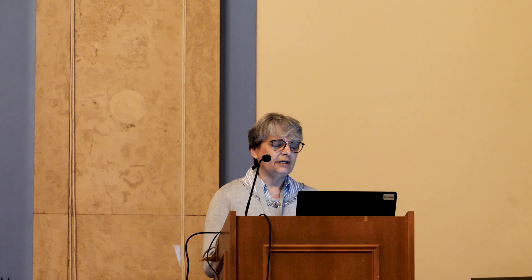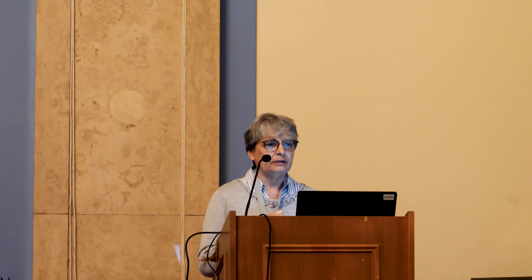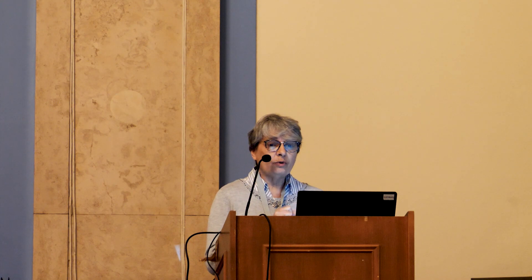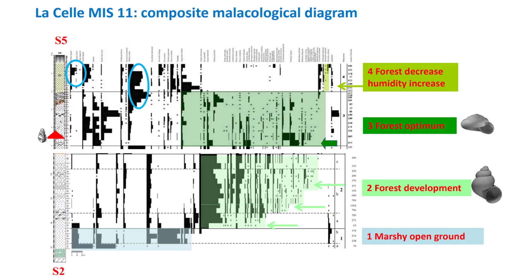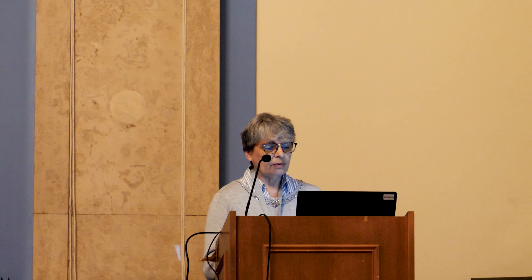I go back to La Sède, which is now very familiar to you — and you understand it is my favourite site. Just a quick slide to remind you of the five forest malacological steps: marshy ground, forest development, forest optimum, and forest decline. Now, on the right again is this malacological record, with in brown the appearance of the layer of Discus fauna. On the left are the records provided by the analysis of the isotopes.